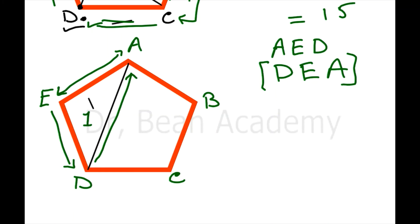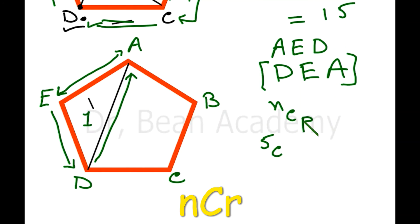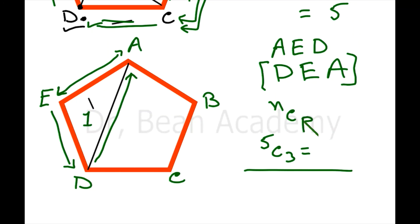Using the same formula NCP: number of choices is 5, and size of the combination is 3. So 5C3 equals 10. It means you can make 10 triangles from a five-sided polygon.